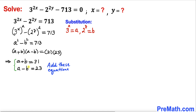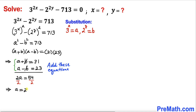Adding the two equations, the positive b and negative b cancel each other out, leaving us with 2a equals 54. Dividing both sides by 2, a turns out to be 27.